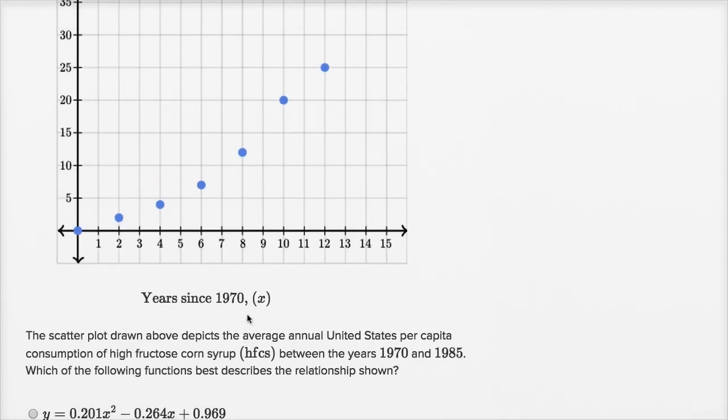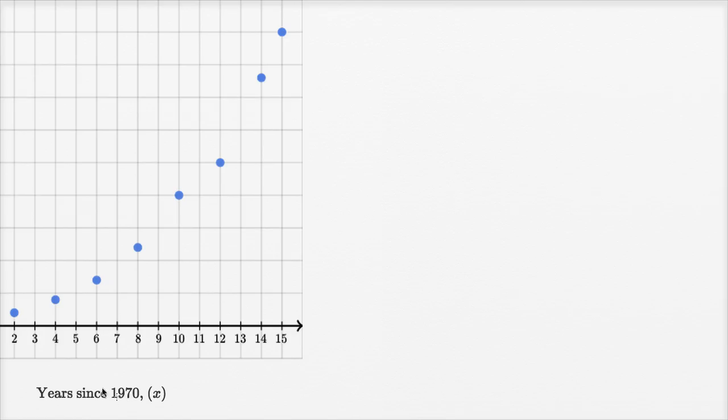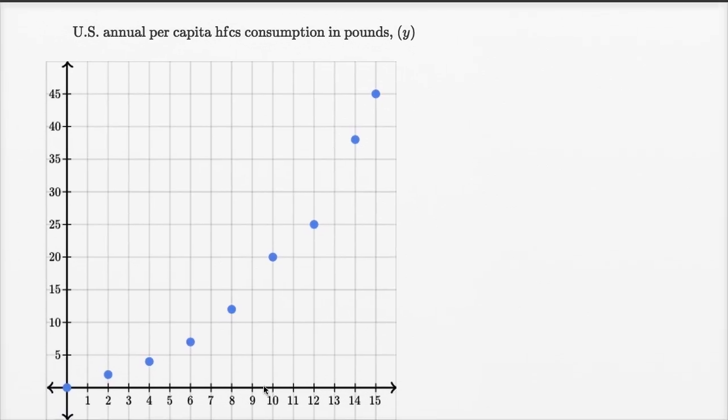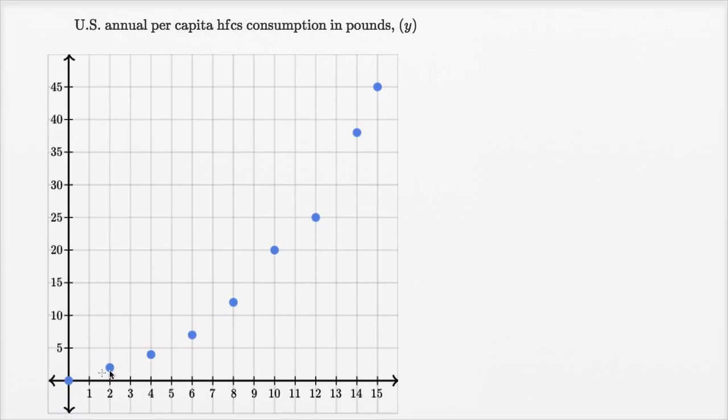So when we look at the scatter plot, we see that it definitely looks like we could fit a parabola to it, or we could find a curve of best fit. And that parabola might look something like this. I'm just kind of estimating it, trying to draw a parabola with my hand. This is gonna be a hand drawn parabola, but it's gonna look something like that.